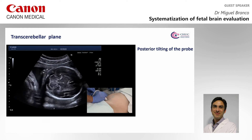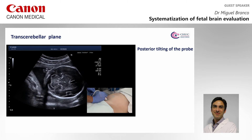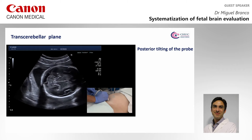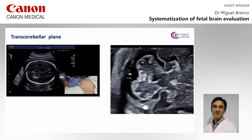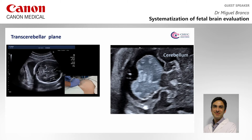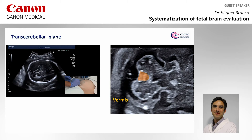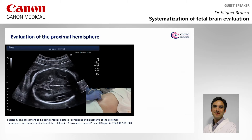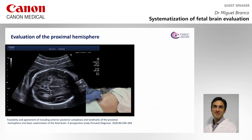With the posterior tilt of the probe, we will gain access to the posterior fossa. In this way, we can study the cerebellum, the slightly more echogenic vermis, the fourth ventricle — short and wider — and the cisterna magna. We can also evaluate the distal as well as the proximal sylvian fissure.